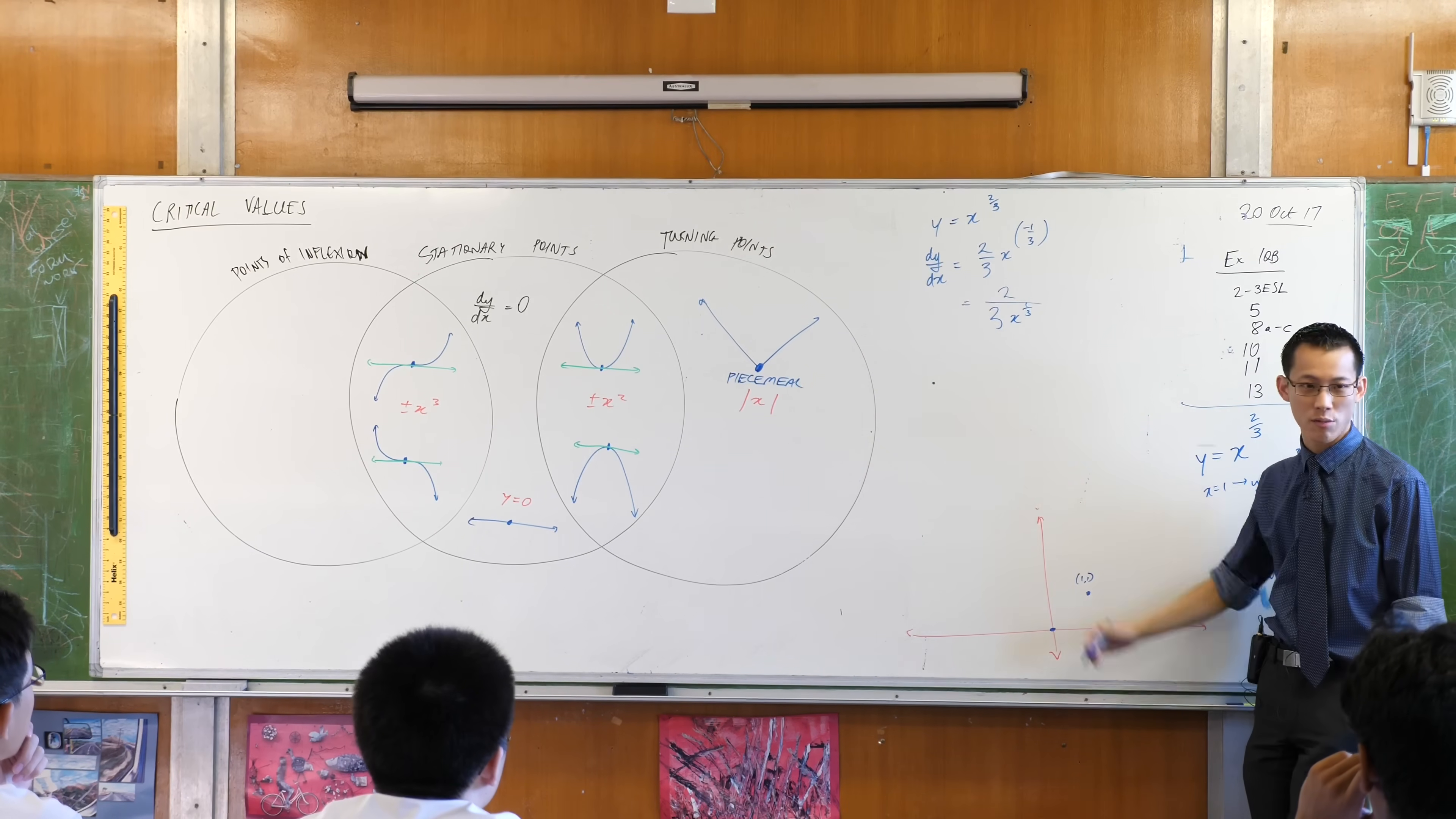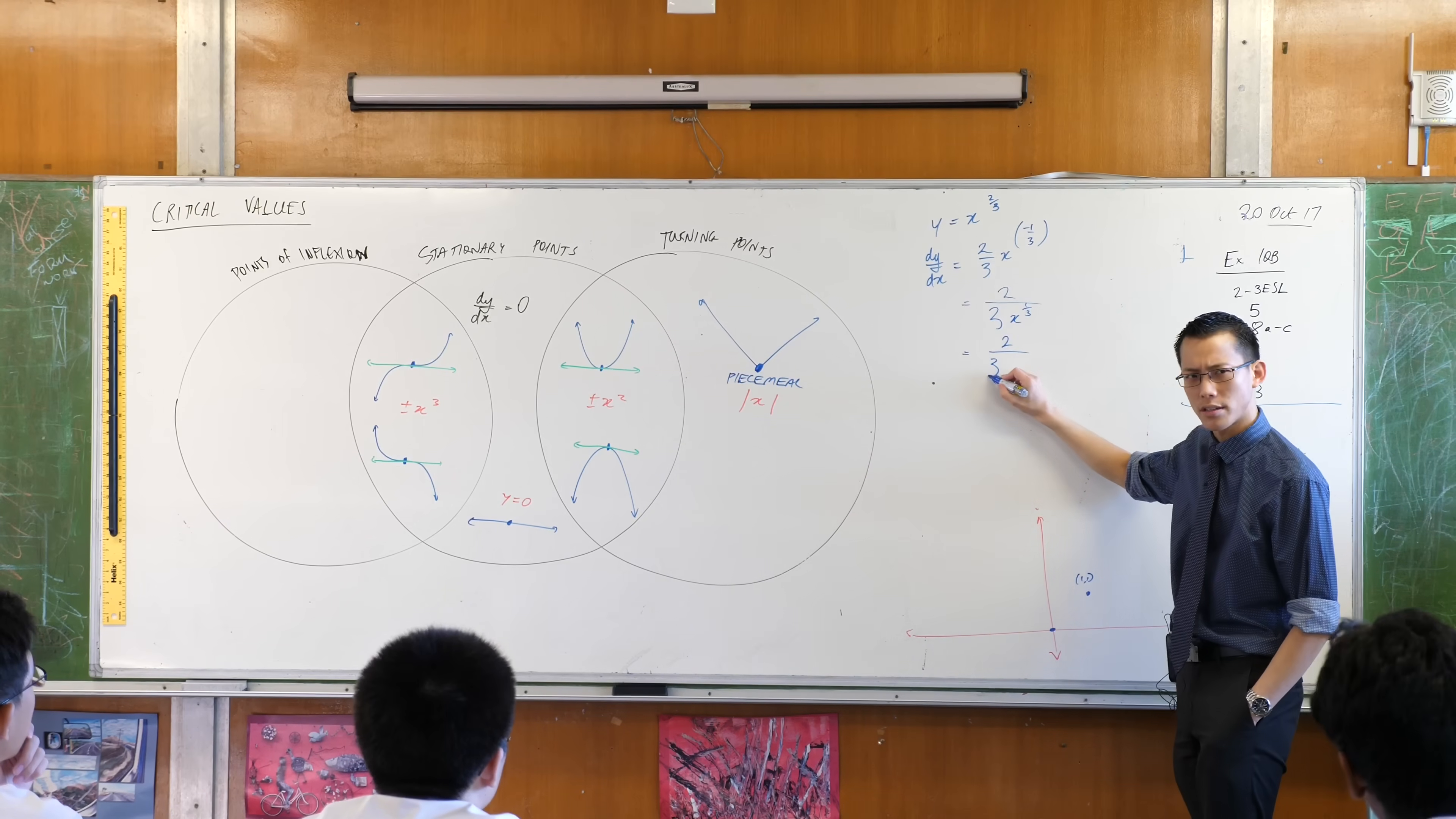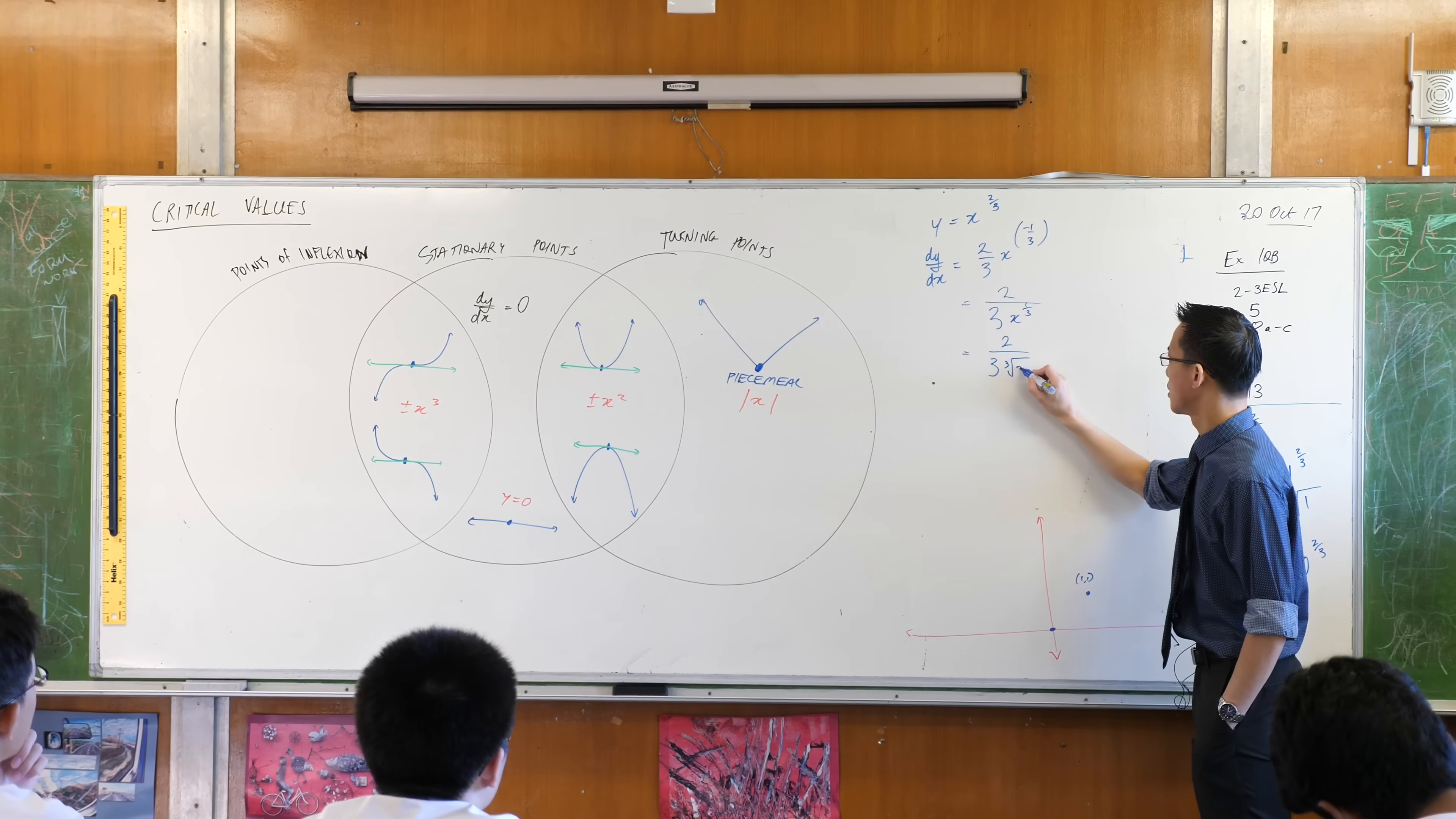I've got x to the power of a third. Are you okay with that? Dealt with that? And at the same time, I might as well get rid of that fraction as well. So this is two on three times what? This is the cube root of x. Very good.